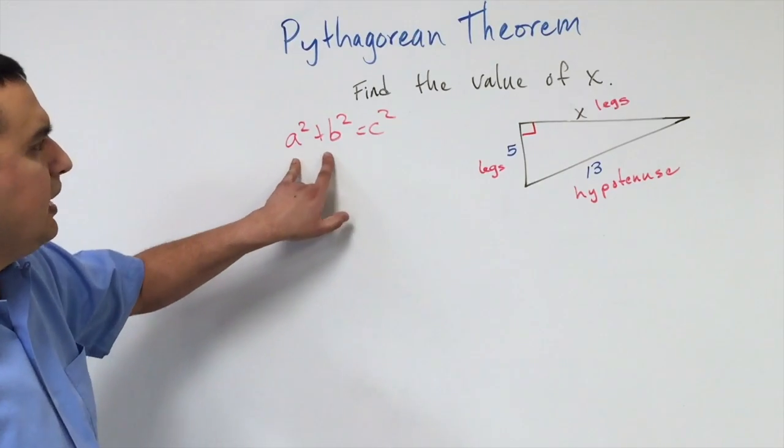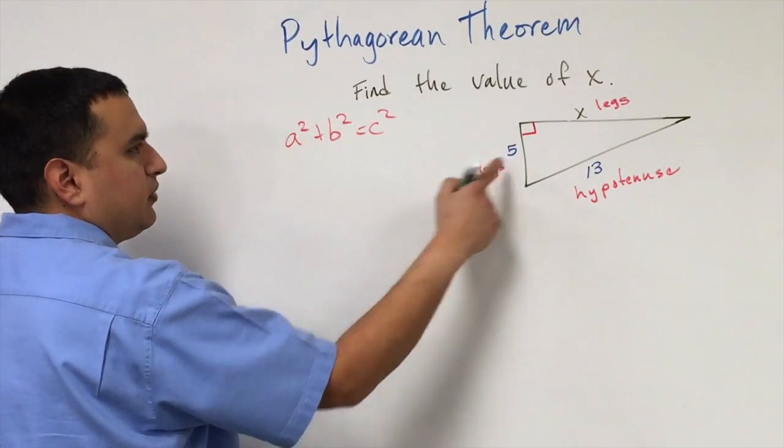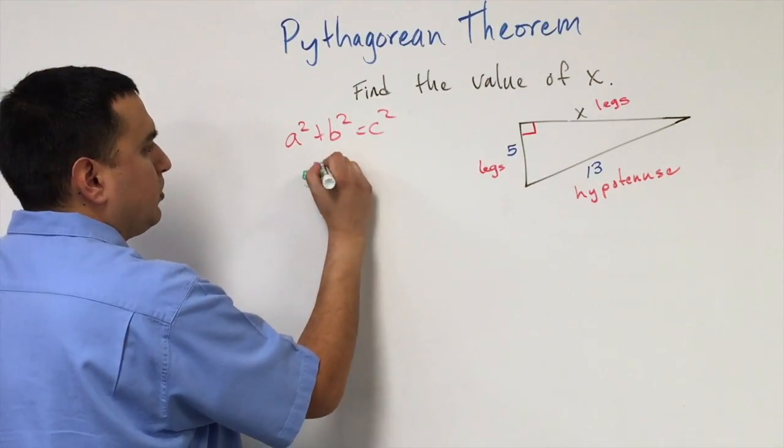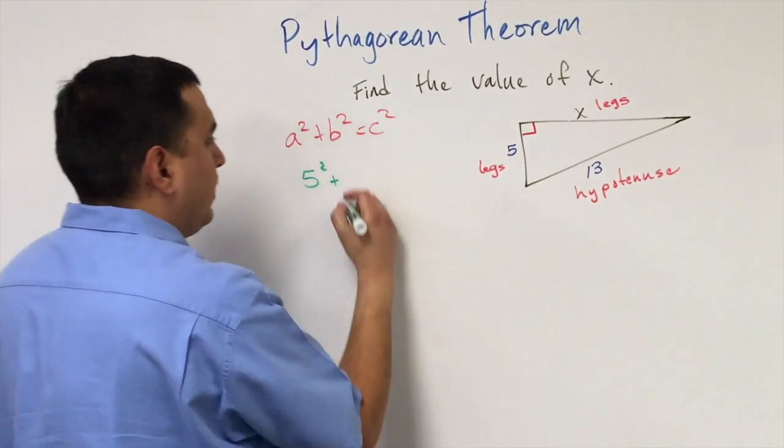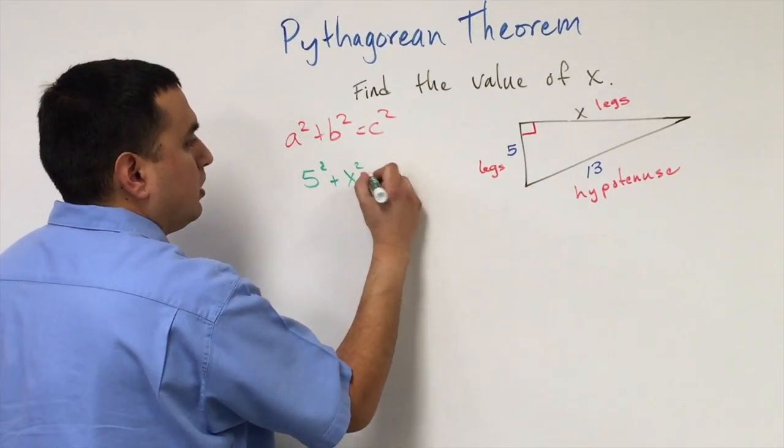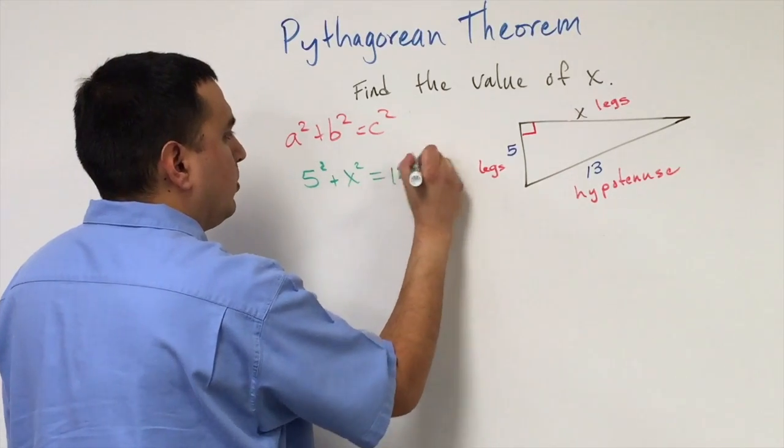For the legs, it doesn't matter which one's a and which one's b. We'll have our 5 be the a, so that's going to be 5 squared plus b squared, which in this case is going to be x, the value we're looking for. And then my c is the hypotenuse, which is going to be 13 squared.